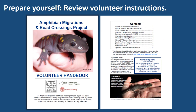To prepare yourself, I encourage you to read the volunteer handbook. You can download it and print it out, or read it online. As you can see from the table of contents, it's a short but comprehensive handbook covering everything from why the migrations happen, what our conservation concerns are, how to participate, what to bring, how to be safe, how to find new amphibian crossings, how to document the migration, and so forth.